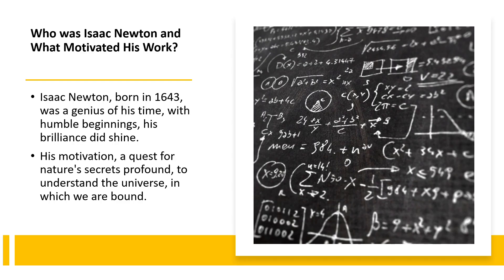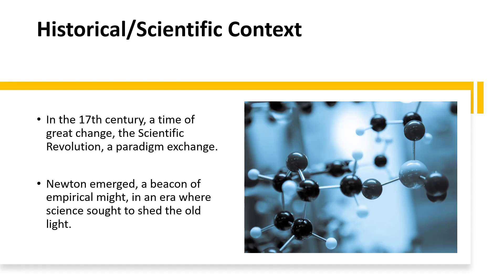Who was Isaac Newton and what motivated his work? Isaac Newton, born in 1643, was a genius of his time with humble beginnings. His brilliance did shine. His motivation: a quest for nature's secrets profound, to understand the universe in which we are bound. Historical scientific context: in the seventeenth century, a time of great change, the scientific revolution, a paradigm exchange. Newton emerged, a beacon of empirical might, in an era where science sought to shed the old light.